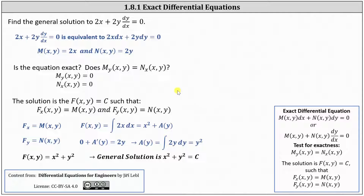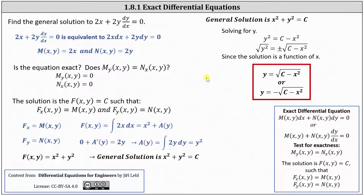Let's solve for y. Subtracting x² from both sides and taking the square root gives y = √(c − x²) or y = −√(c − x²). Remember the solution to a differential equation needs to be a function.